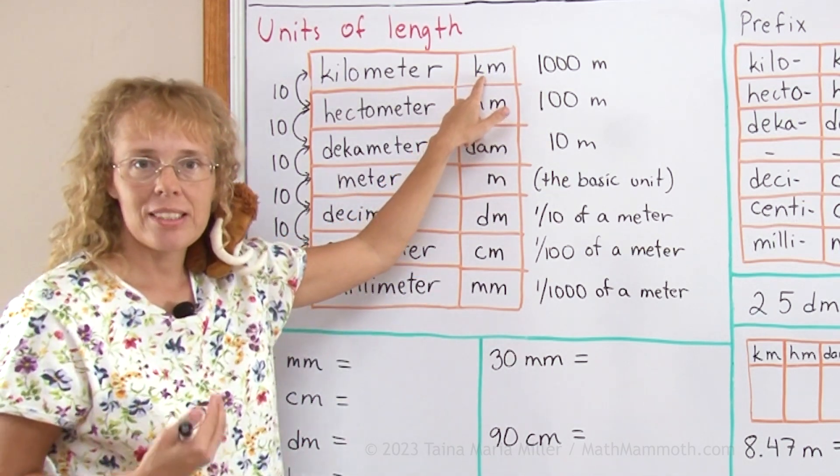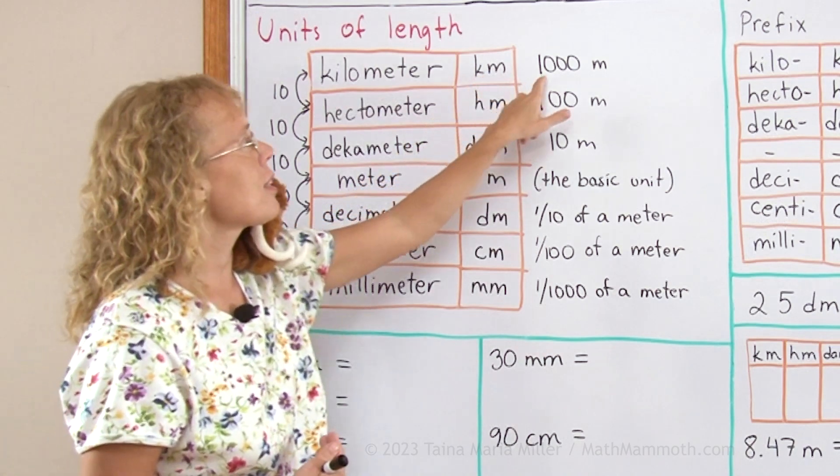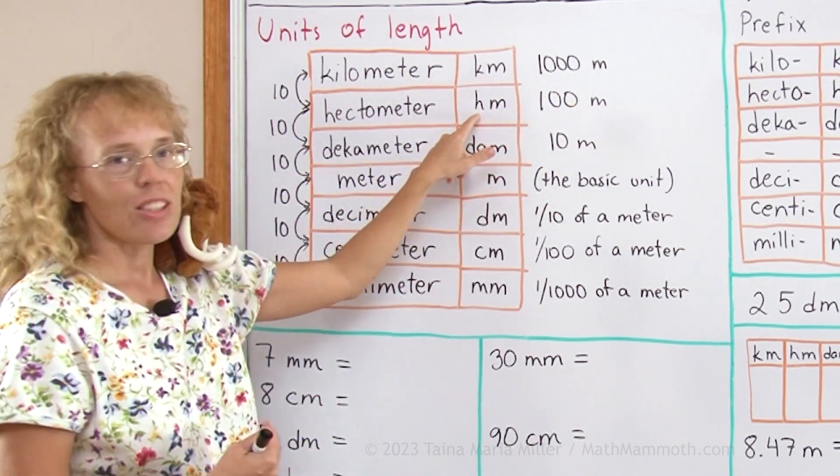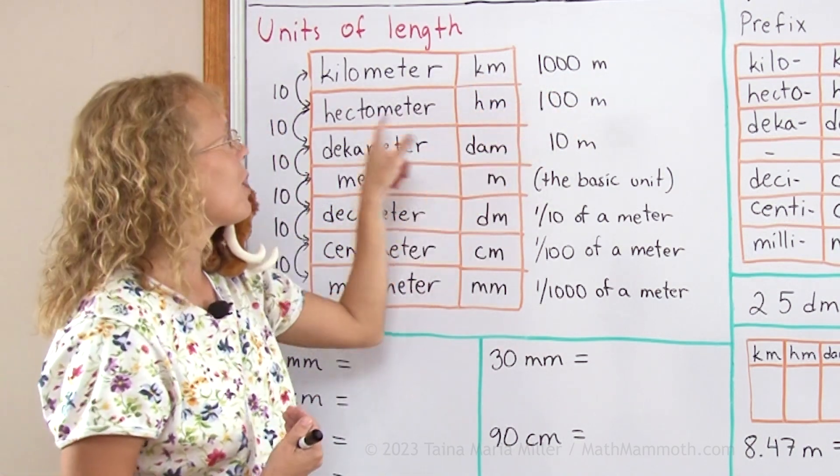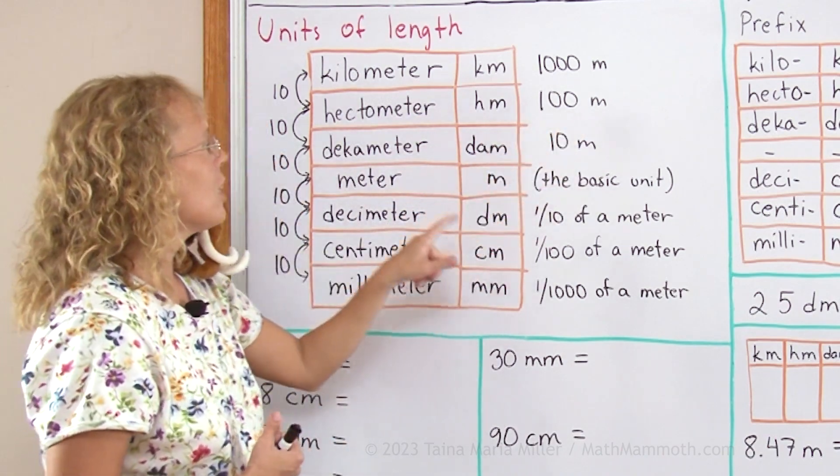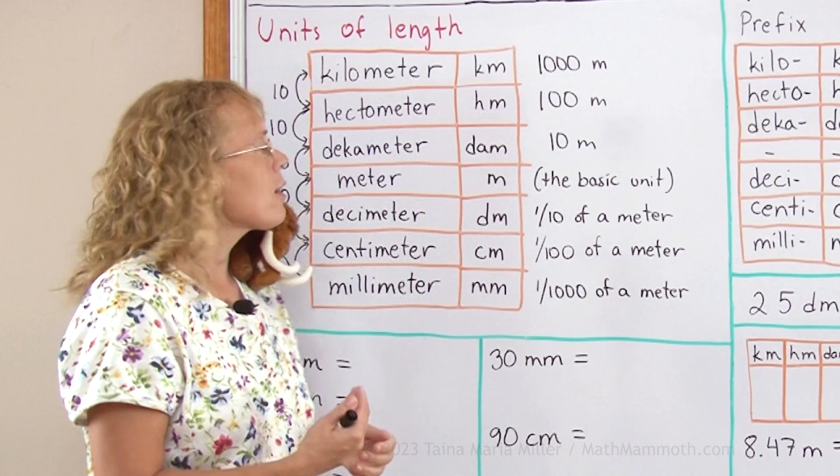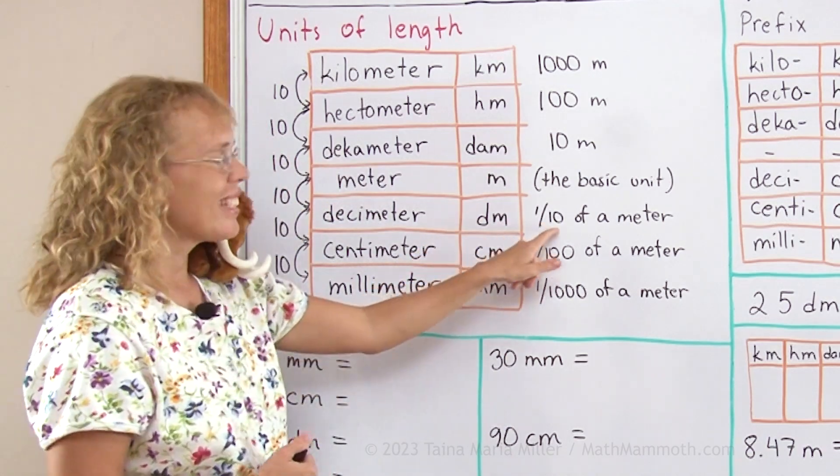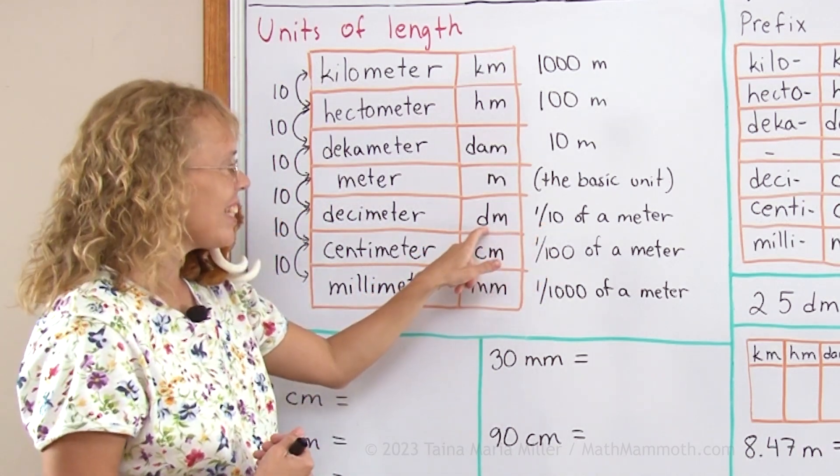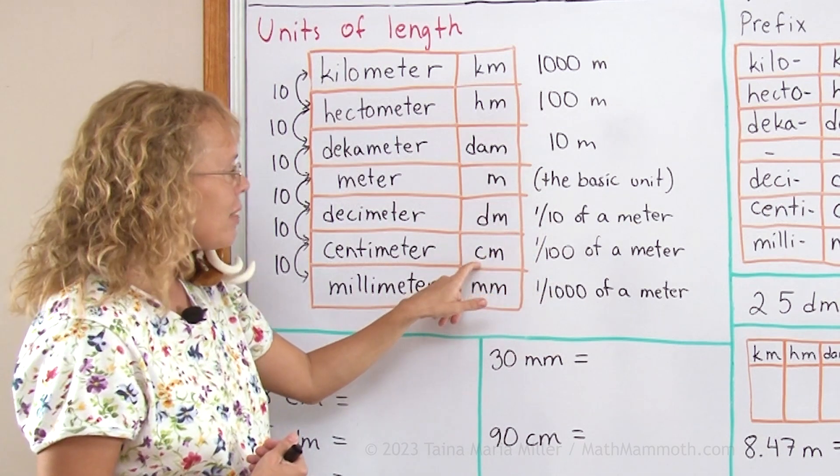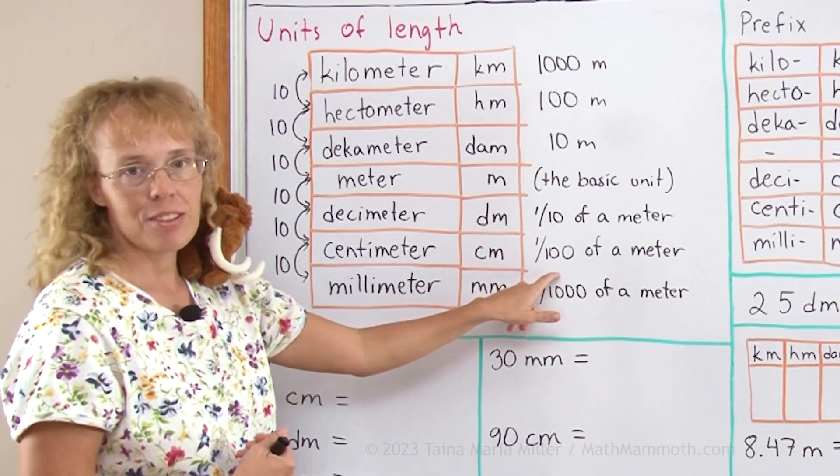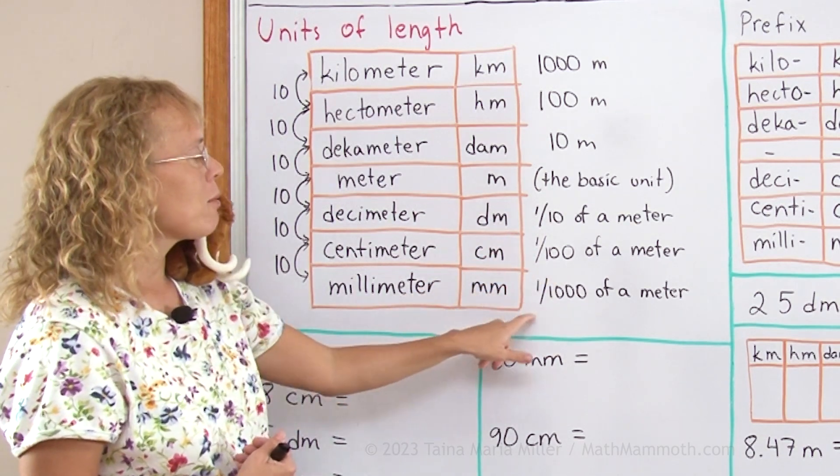Kilometer - the word kilo here means 1000, so that's why this is 1000 meters. The word hecto meaning 100, so this is why hectometer is 100 meters. Decimeter is 10 meters. Meter is the basic unit for length. Then decimeter is one-tenth of a meter, deci meaning one-tenth. Centimeter, centi meaning one-hundredth. And then milli meaning one-thousandth.